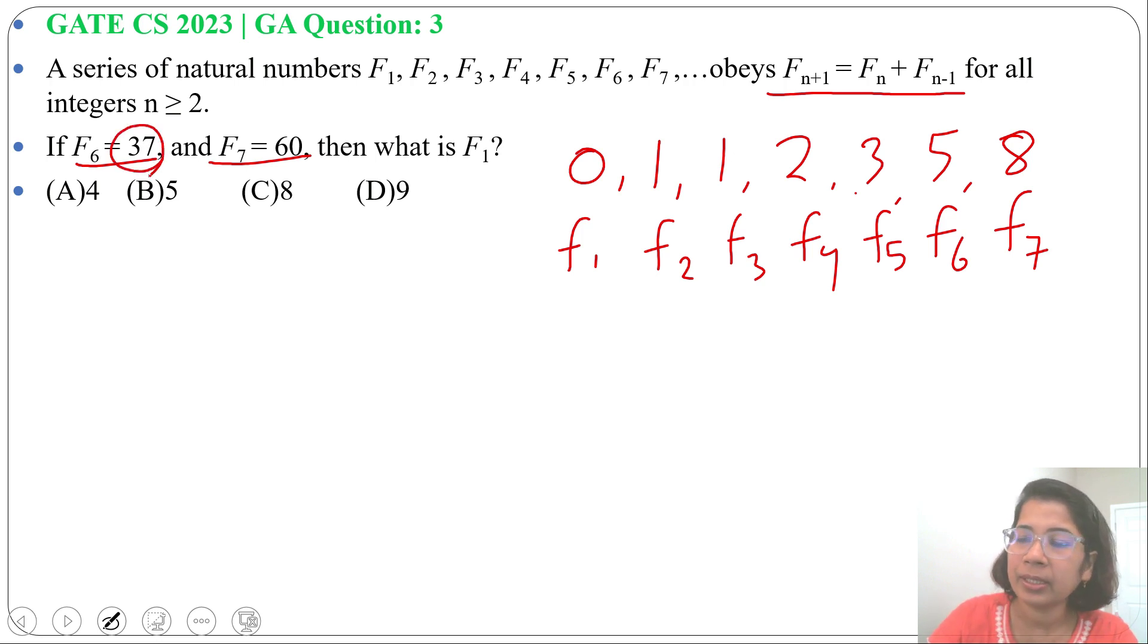Here f(6) is given as 37, but in the Fibonacci series f(6) is 5 and f(7) is 8. So this sequence is not Fibonacci. The formula is the same as Fibonacci, but here the starting numbers are different.